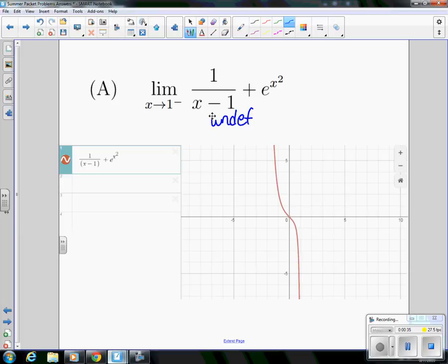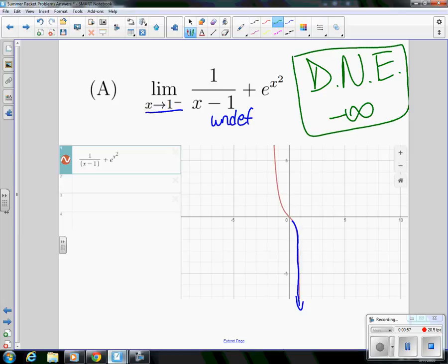But one thing that we can do is just look at the graph, and we see that as the limit as x approaches 1 from the left, in fact it is going down toward negative infinity. So this limit does not exist, but more specifically we can at least say that it is going toward negative infinity. So that would be our solution for problem 3A from the AP summer packet.